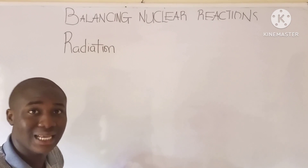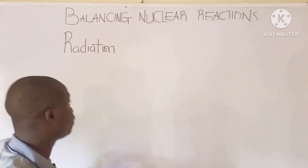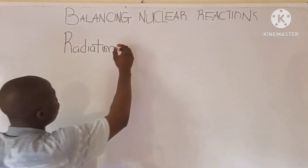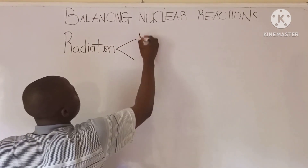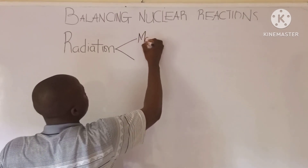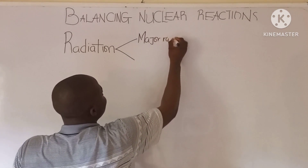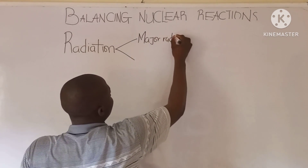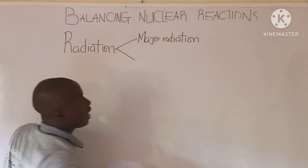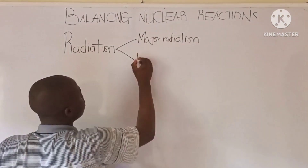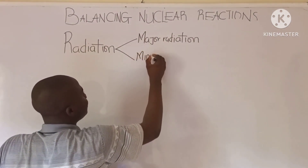It must be noted that radiations are of two types majorly. The first type are called the major radiations, and the other type is called the minor radiation.